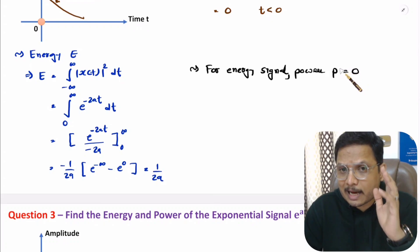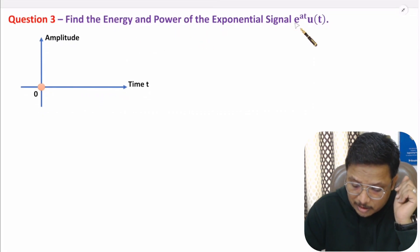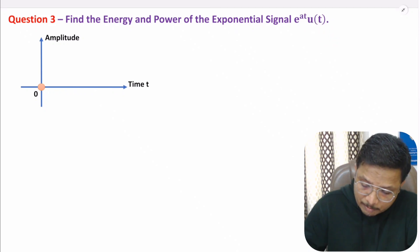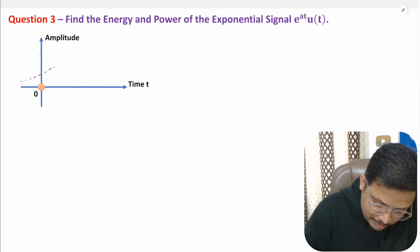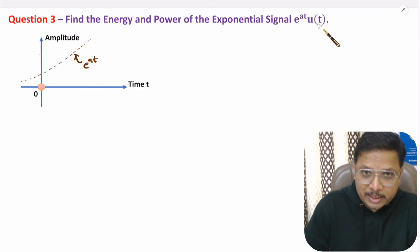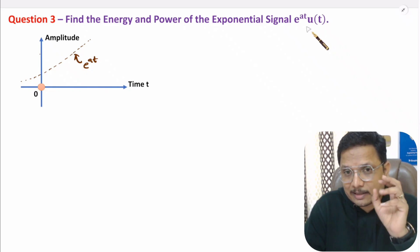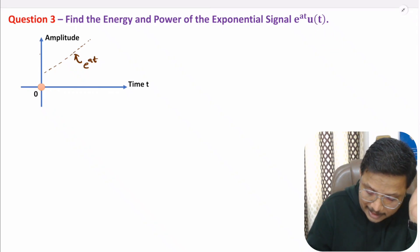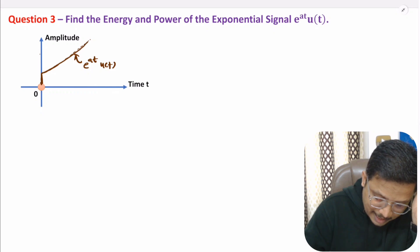Now I will explain the last example of this video. We need to identify energy and power for the exponential signal e to the power at times u(t). First, you need to understand how that signal will appear. E to the power at multiplied by u(t) — since u(t) has value 1 for t greater than or equal to 0 and 0 for t less than 0, the portion for t less than 0 is eliminated, and the signal appears as a growing exponential curve.